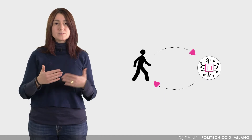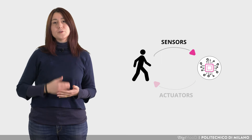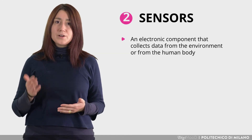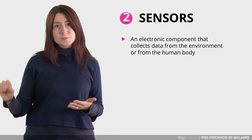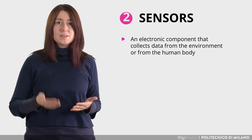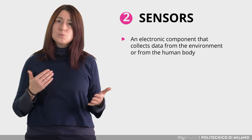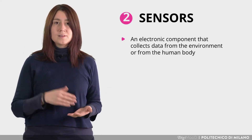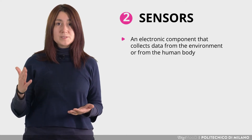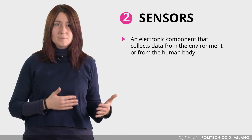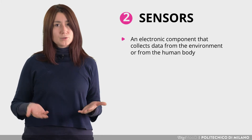After having seen the central component of our wearable, now let's analyze the other elements: sensors and actuators. They are between the person and the MCU. Sensors are all the electronic components capable of sensing environmental or body parameters and transforming them into electrical signals that can be read by a microcontroller.